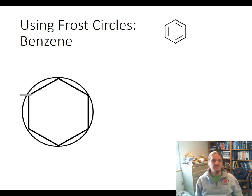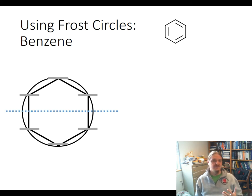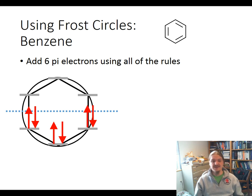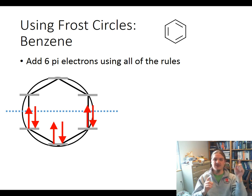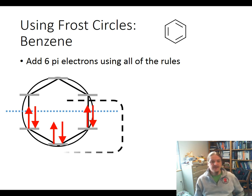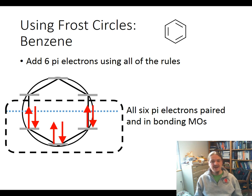So while my frost circle for benzene rebuilds itself here, let's talk about benzene. Benzene has 6 pi electrons — there are 3 drawn pi bonds, so we have 6 electrons to work with. We fill in all 6 electrons using the rules we're used to for electron configurations: the Aufbau principle, starting at the bottom and working up; Hund's rule, putting one electron into each degenerate orbital before adding a second; and the Pauli exclusion principle, where we can't match spins within the same orbital.